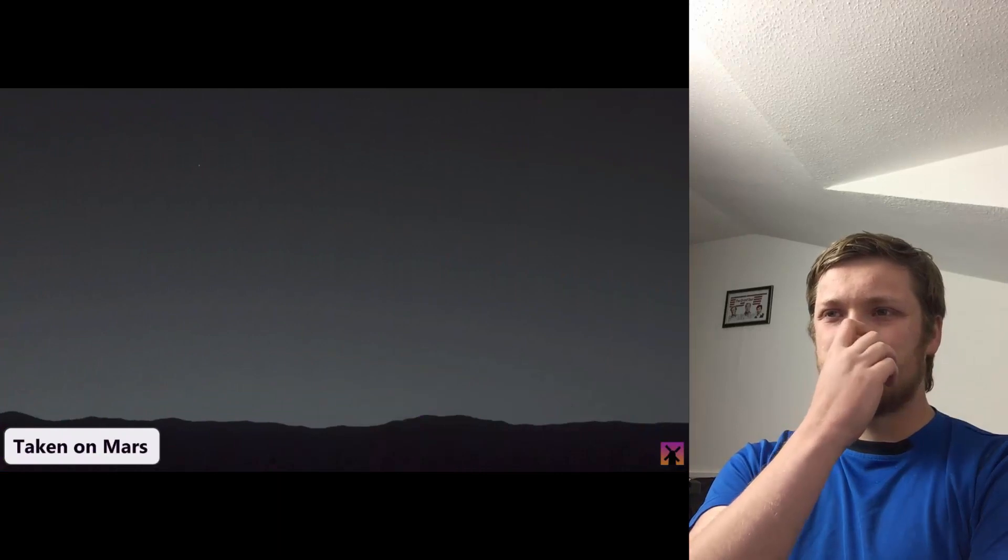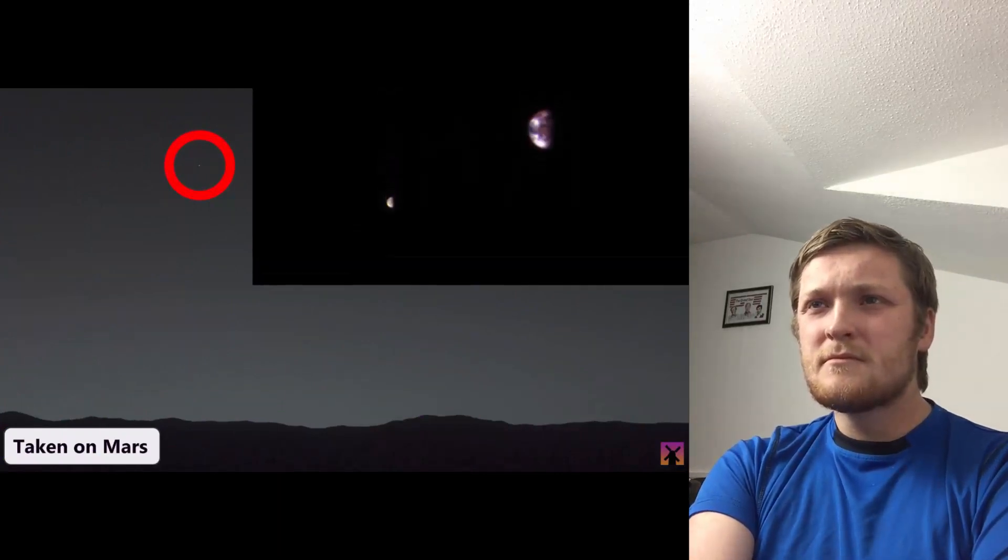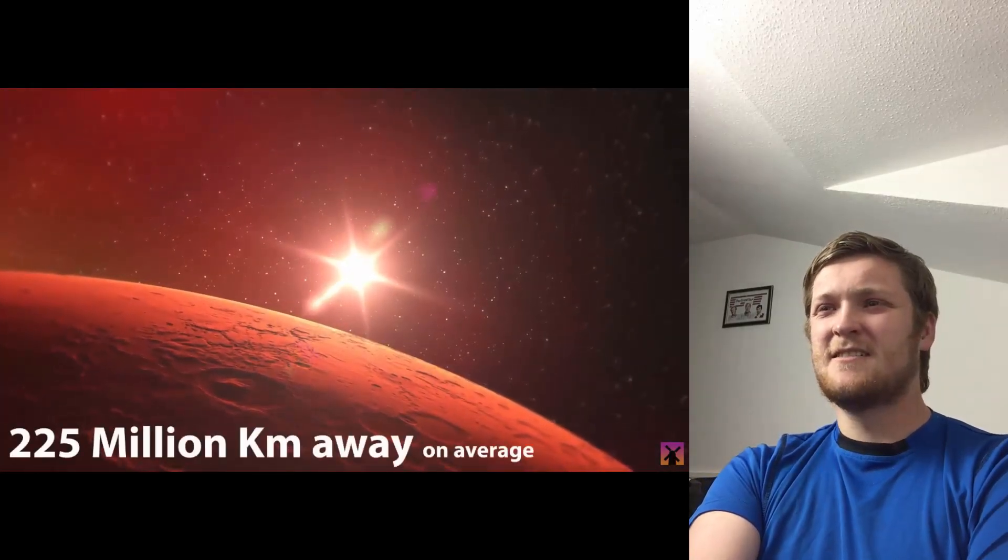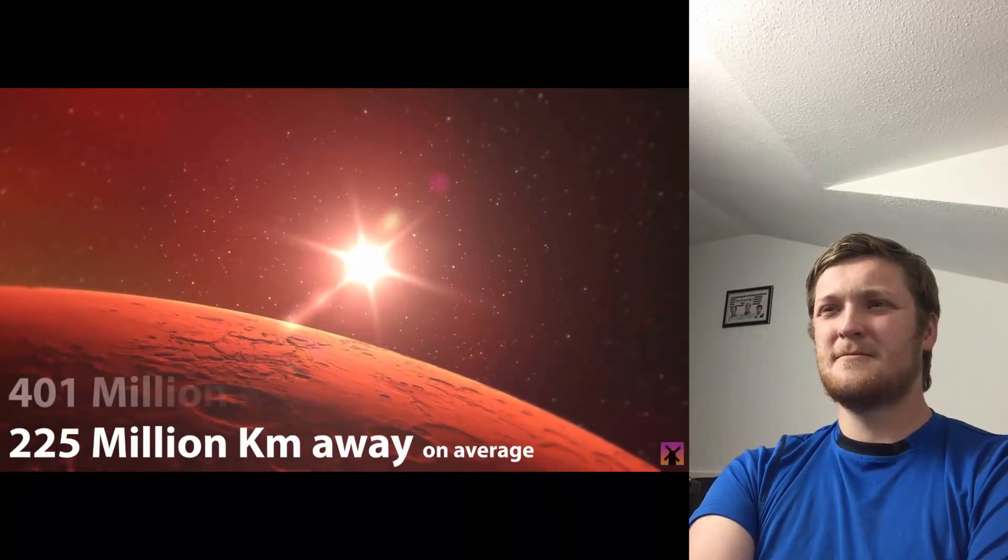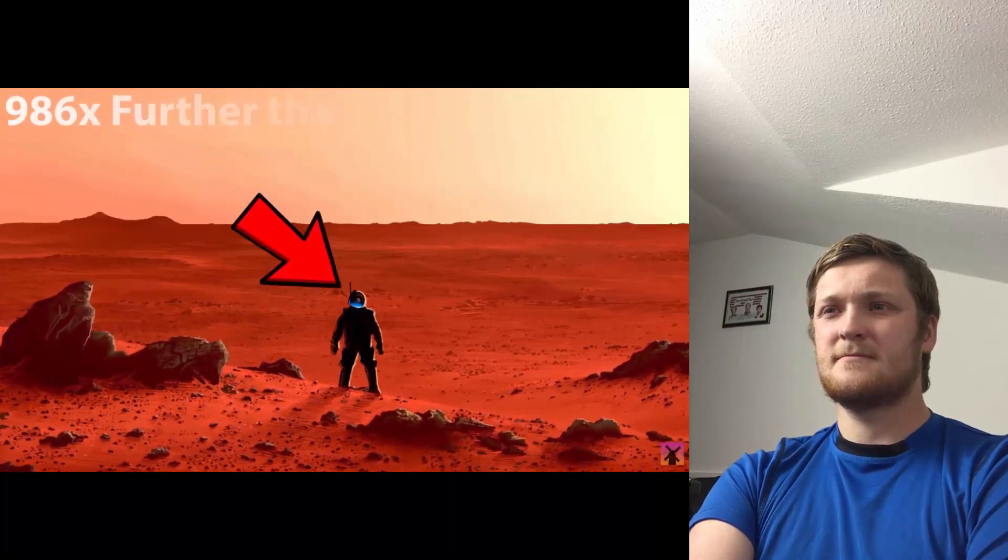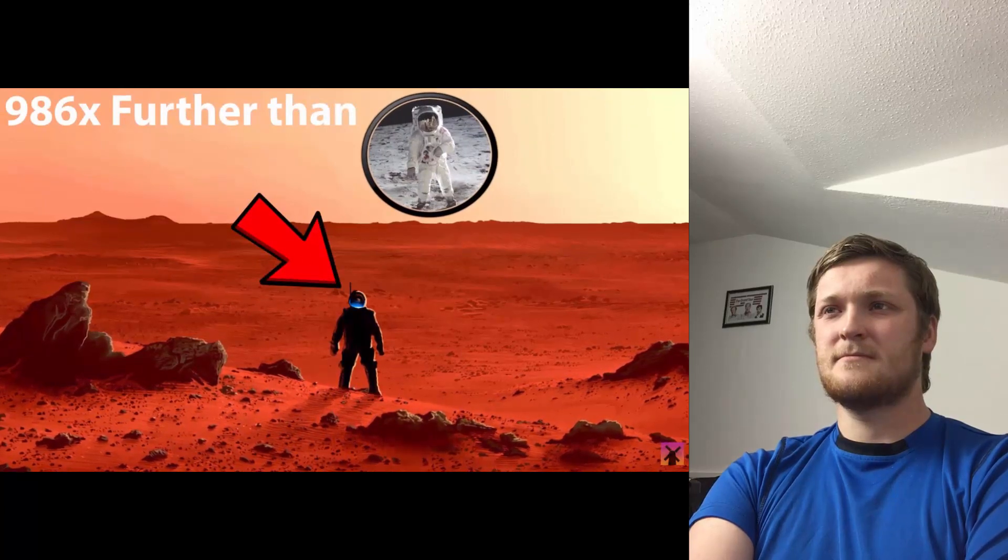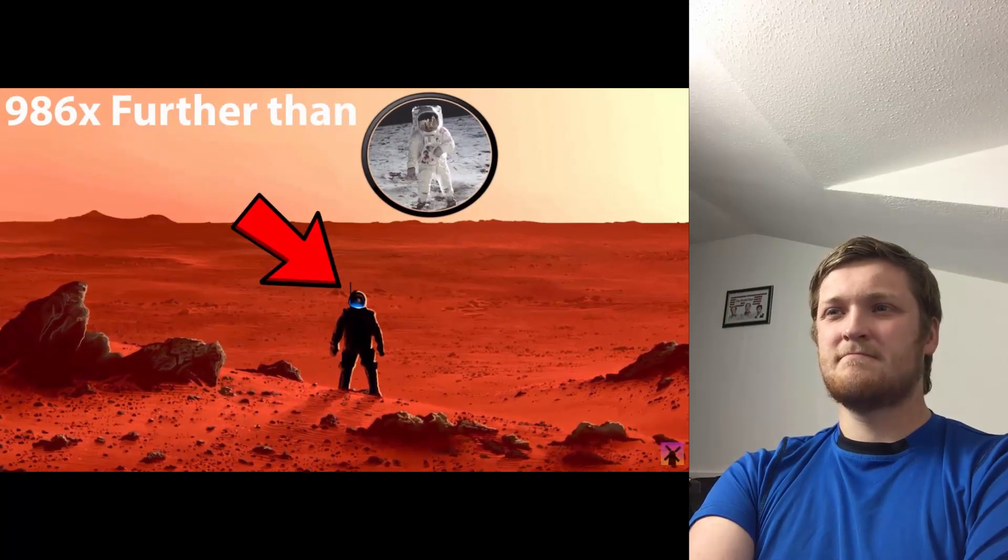This is a photo taken on Mars, and that tiny dot you see there is Earth as seen from the Martian surface. On average, Mars is an incredible 225 million kilometers away from Earth, but that distance can be as high as 401 million kilometers. That means whenever humanity finally lands a human on the planet, that person will be 986 times further away from Earth than the astronauts who landed on the moon. That'll be such an achievement when mankind finally lands on Mars.